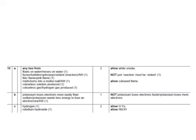And finally, here are the answers. Any two observations such as floats on water, fizzes, bubbles, potassium gives a lilac flame, melts, forms a ball, coloured solution, and so on. Potassium loses electrons more easily than sodium, so that's why it's more reactive. And the products are hydrogen and rubidium hydroxide in either order.